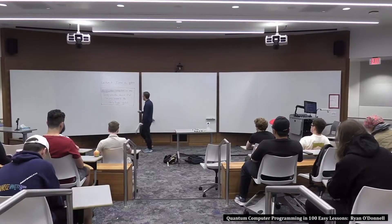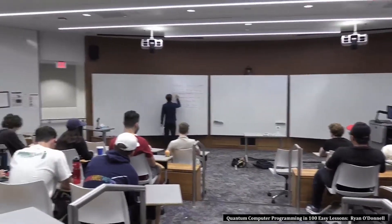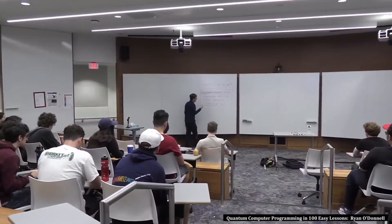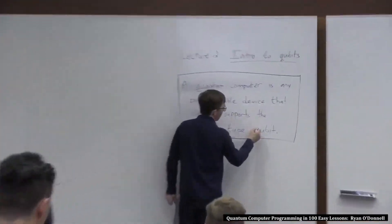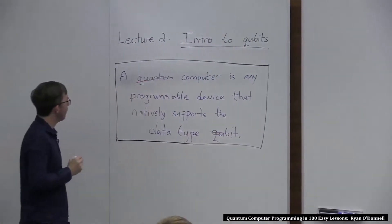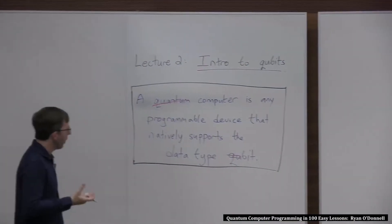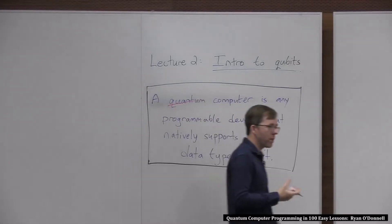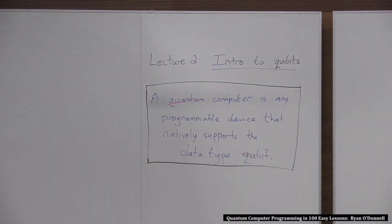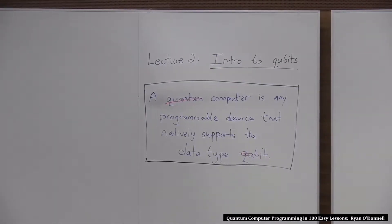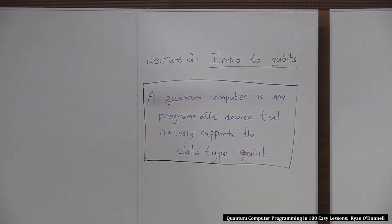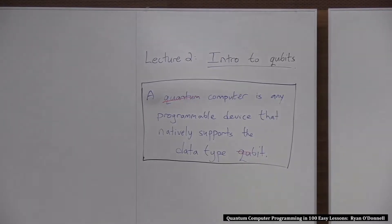So I can just cross out some bits, and I think this becomes still a reasonable definition. Bits as in pieces. It still becomes a reasonable definition if we just say a computer is any programmable device that natively supports the data type bit. Because that's what the regular computers that we all have do, right? They manipulate bits.